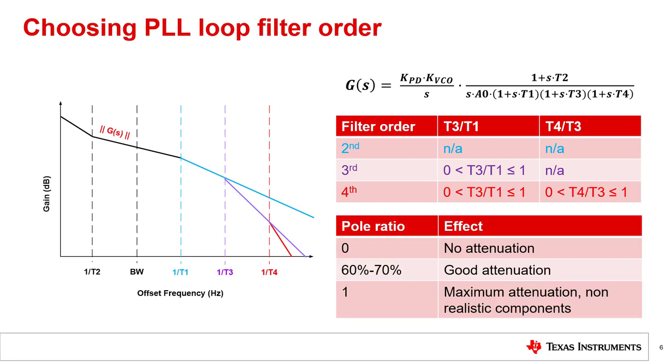When the pole ratio is zero, there is no extra attenuation. When the pole ratio is one, you get maximum attenuation. However, this isn't possible with a passive loop filter in reality, as the resistors become infinitely large and capacitors tend towards zero. To get close to the best attenuation, a pole ratio of 68% is targeted. With this pole ratio, you can get an attenuation within 1 dB of the maximum attainable benefit.